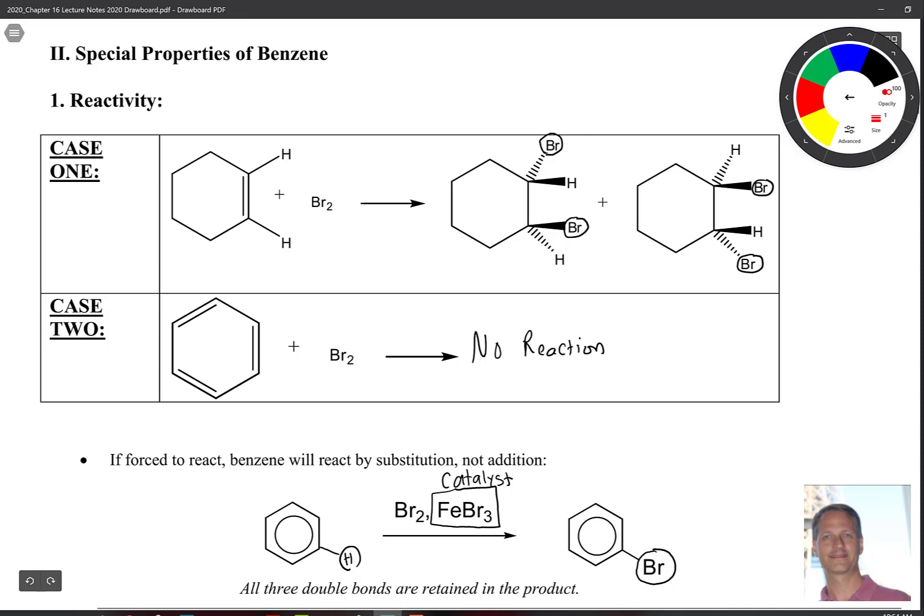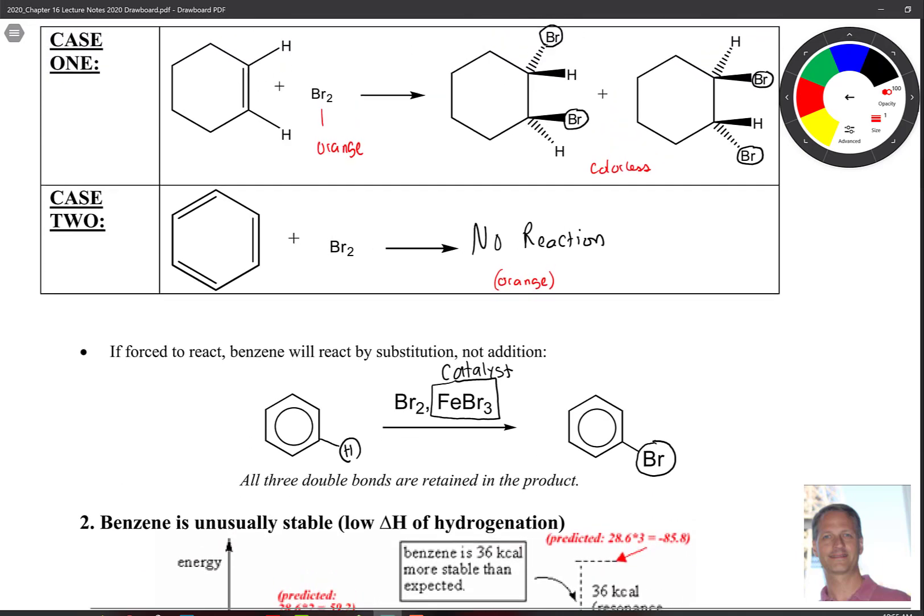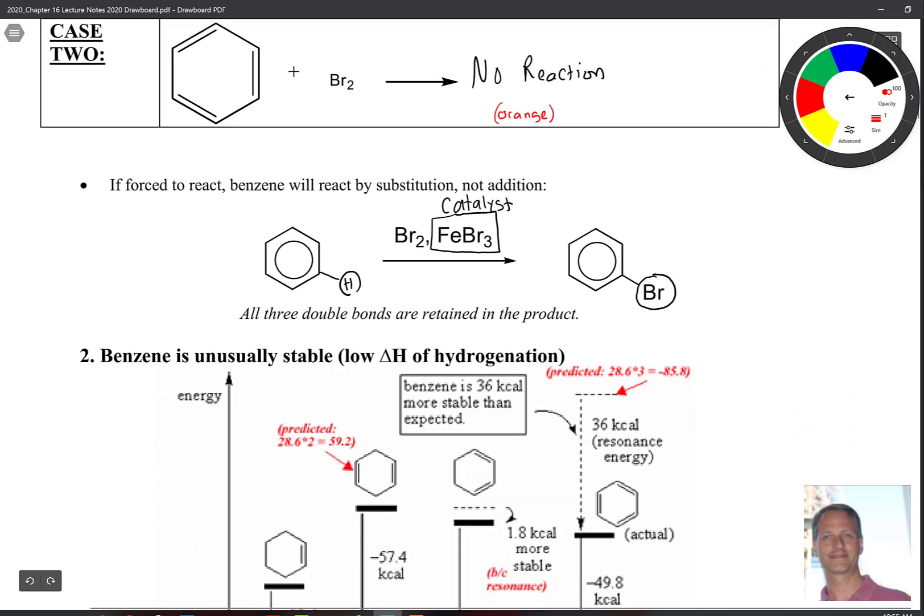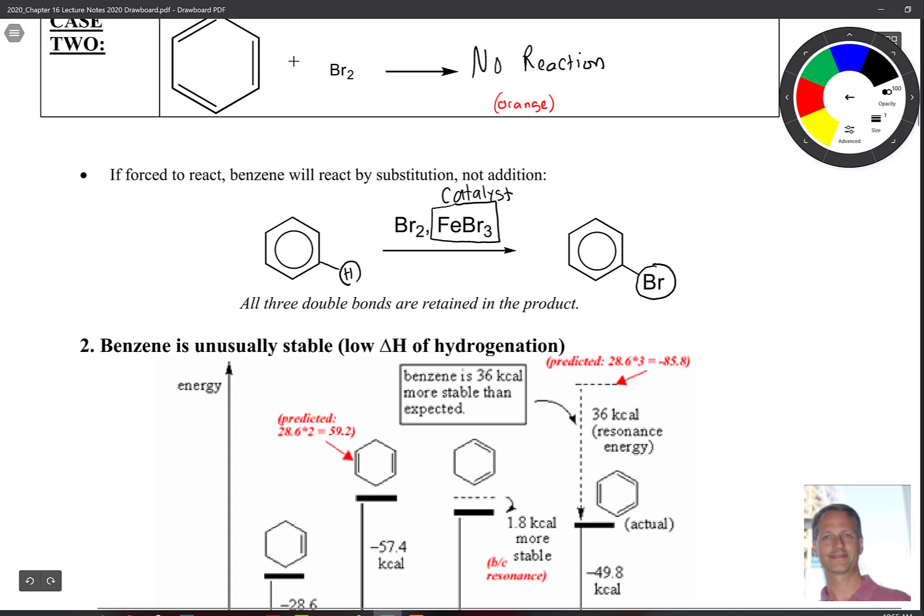we actually find that there's no reaction. And this is a qualitative test that we do in lab sometimes. Bromine has an orange color to it, so when you add it to this alkene, the solution becomes essentially colorless. In the second reaction, this case two, the end result is that we still have an orange color. Now we can force benzene to react. The reaction that we see up above is an addition reaction because you added bromine across the double bonds. The H's that are here still stayed there. Now if we add FeBr3, we end up getting a substitution. So that H is replaced with a bromo group.